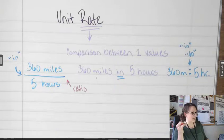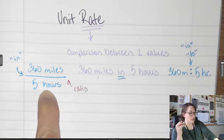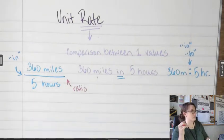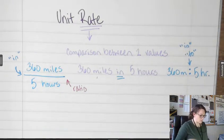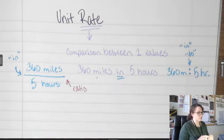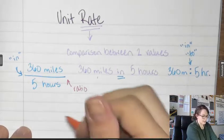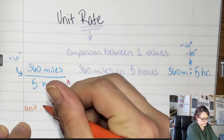If it says write it as a ratio, that's a ratio. A ratio is also a comparison between two values. Now, when we start dealing with miles per hour, that's what we call a unit rate, which is what we are dealing with today.